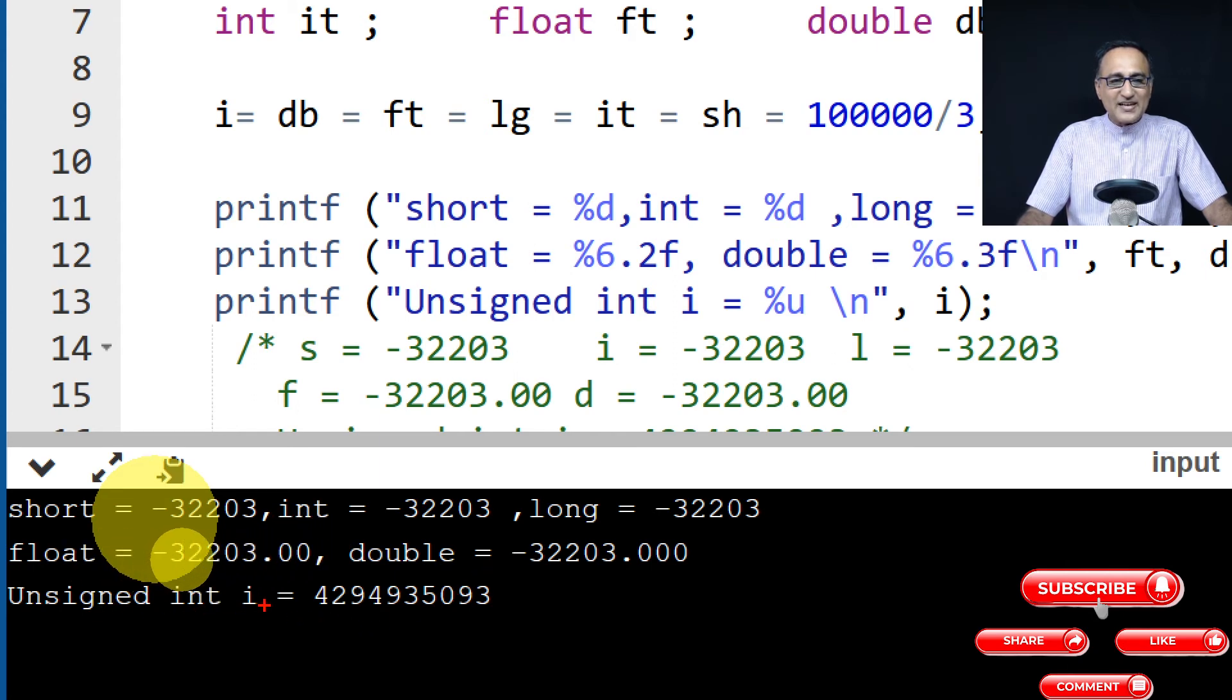there's nothing called negative in unsigned integer. So this two's complement number, negative number is represented in this two's complement happens to show up as a very huge positive number. So when you print I, this is the number you get.